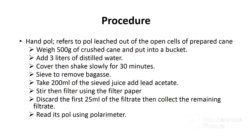In this analysis we need to find two values — hand pole and rapid pole — which will help us calculate the preparation index percentage. Hand pole refers to the pole leached out of the open cells of prepared cane, while rapid pole refers to the pole from open cells as well as disintegrated cells of prepared cane.